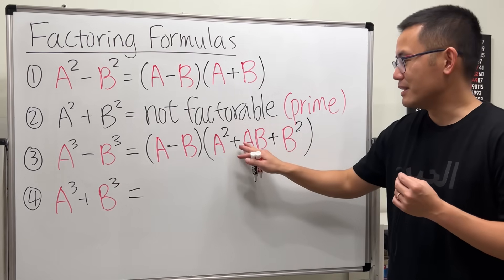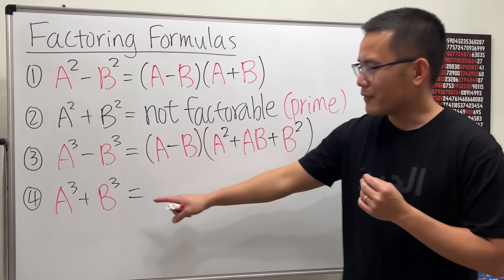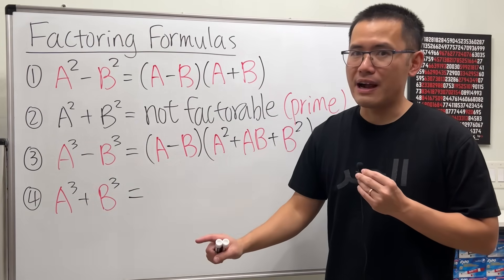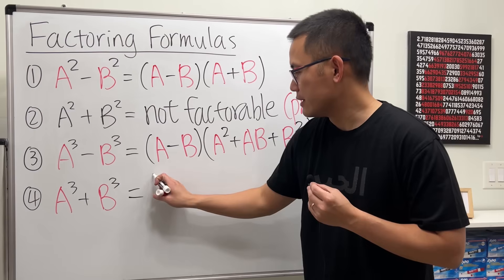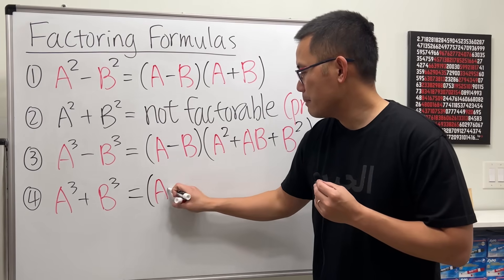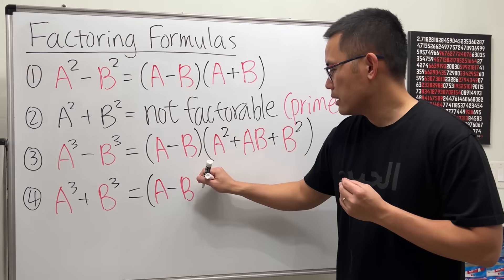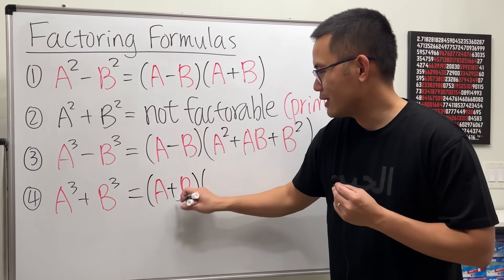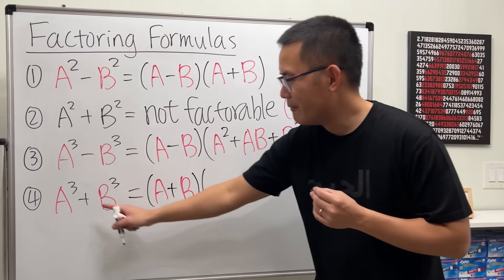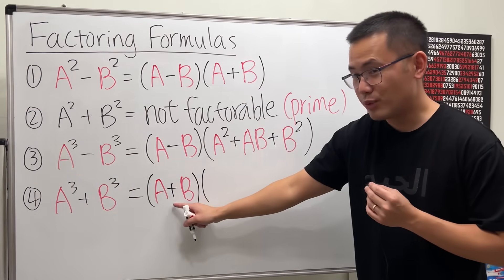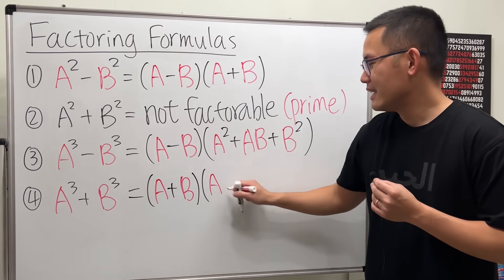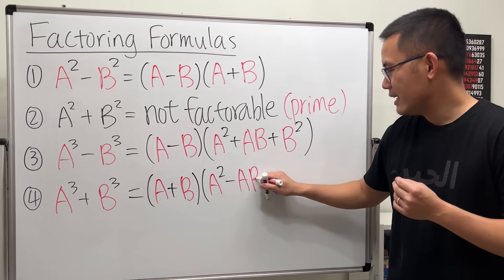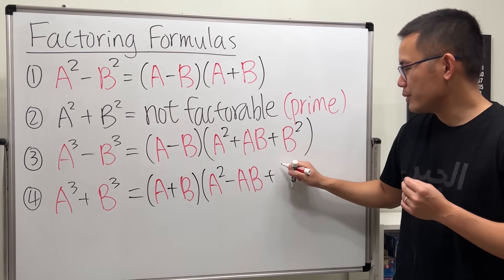For the last one, if we have the sum of two cubes, this is actually factorable. We get a plus b — if this is a plus, the first sign will be a plus — and then the middle term will be a minus, and the last term is also going to be a plus.